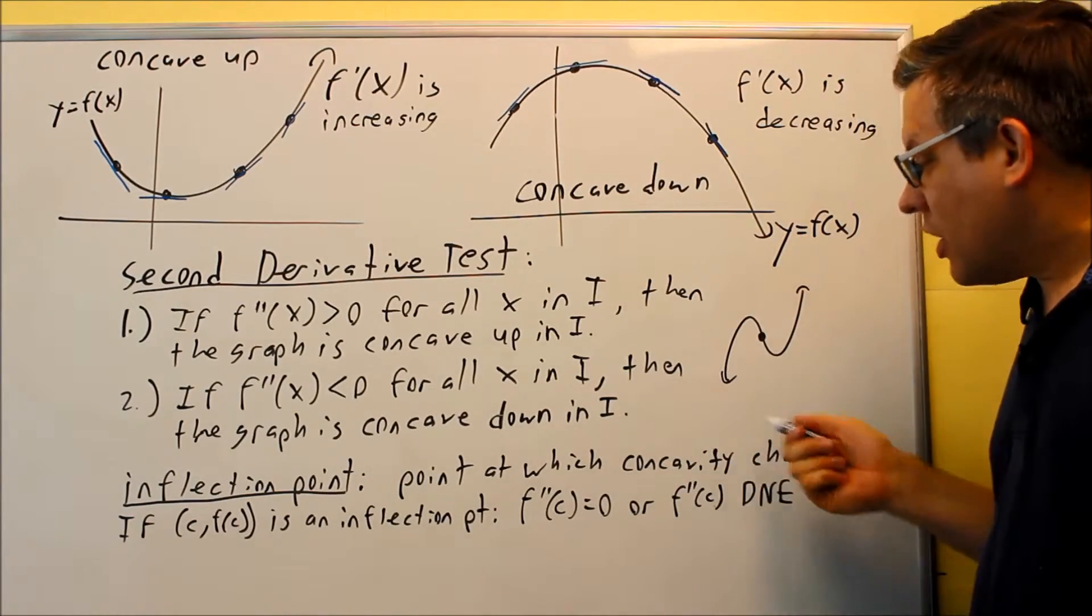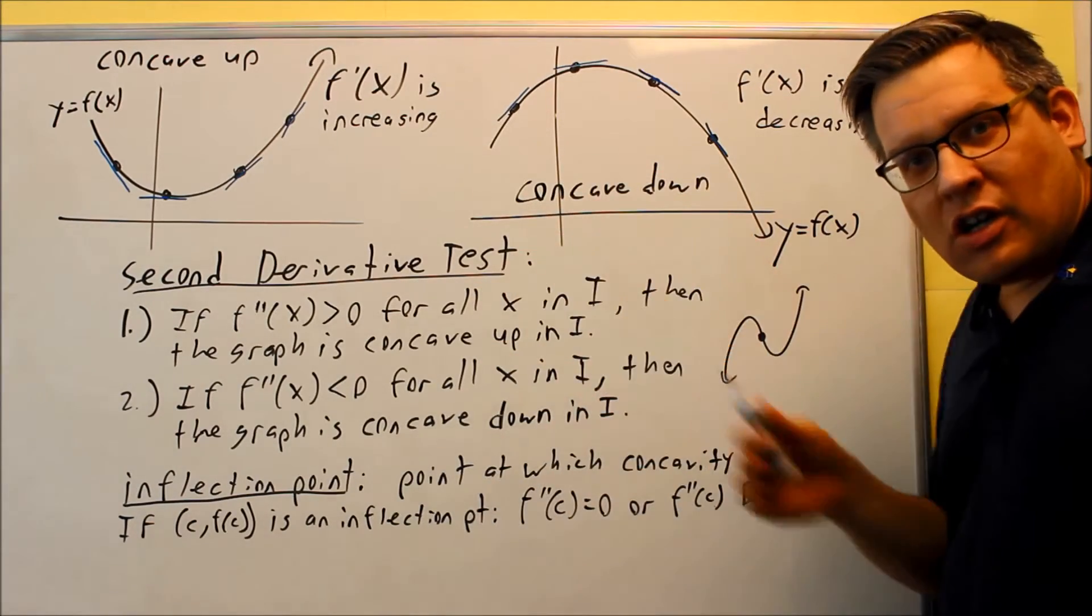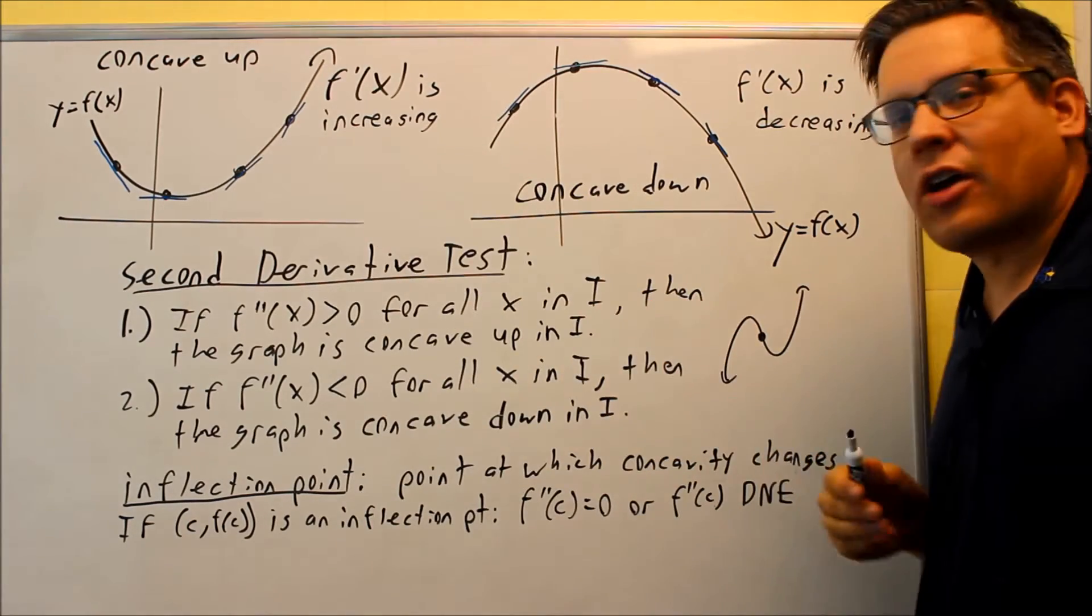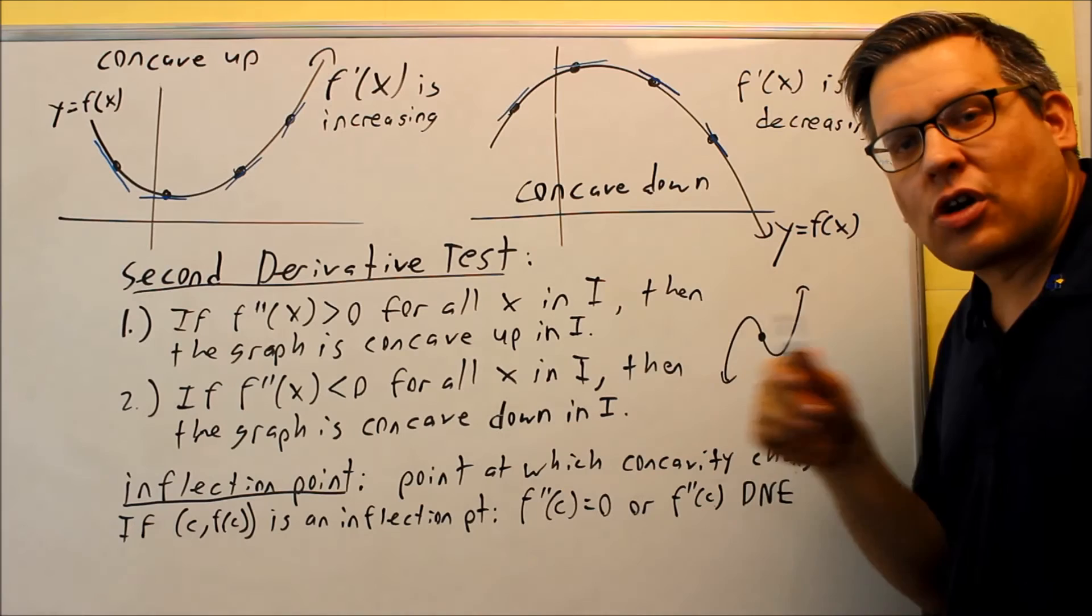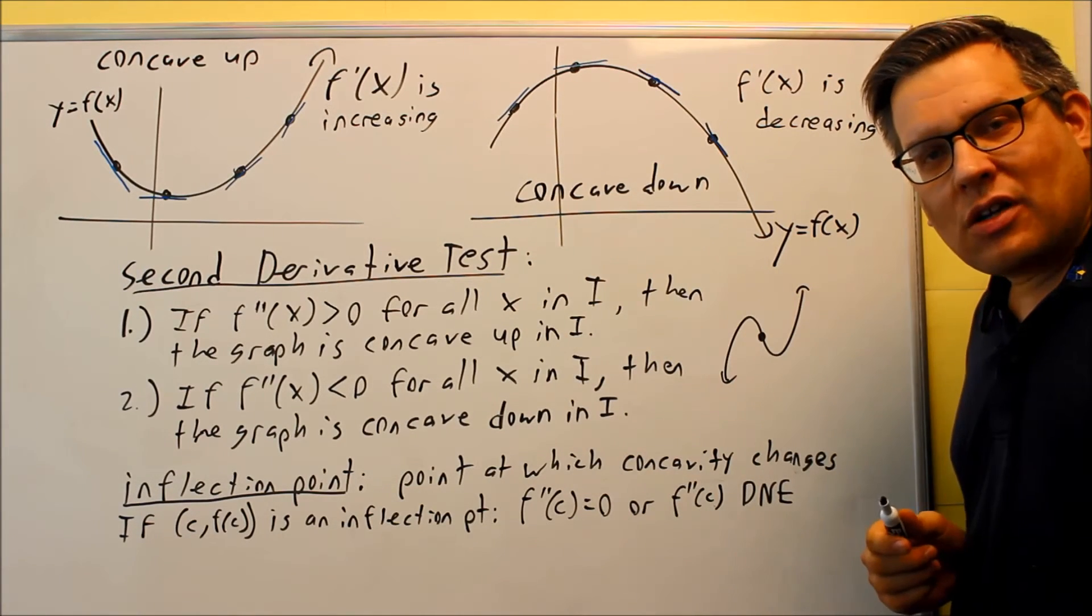So if that's the case, then again there's two different situations where you could have an inflection point. So this is real similar to what we did before with the first derivative test, but now we're just analyzing the second derivative, but we're still making tables and charts and looking at pluses and minuses, we're just now looking at it with the second derivative.